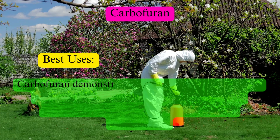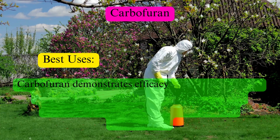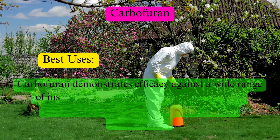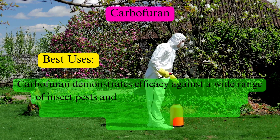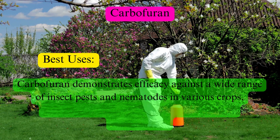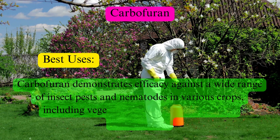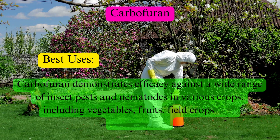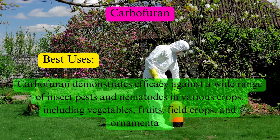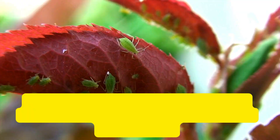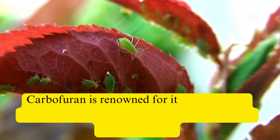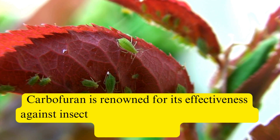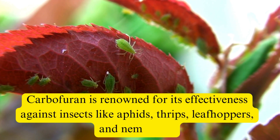Best uses. Carbofuran demonstrates efficacy against a wide range of insect pests and nematodes in various crops, including vegetables, fruits, field crops, and ornamentals. Carbofuran is renowned for its effectiveness against insects like aphids, thrips, leafhoppers, and nematodes.